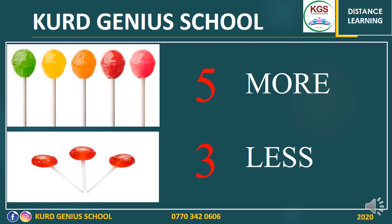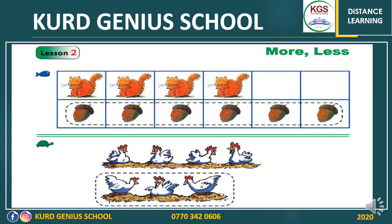By the way, three is less than three. For example, in page five, we have some pictures. The first picture is the picture of a squirrel. How many squirrels do we have? Let's count it.